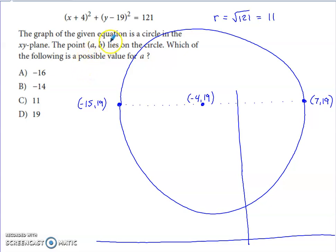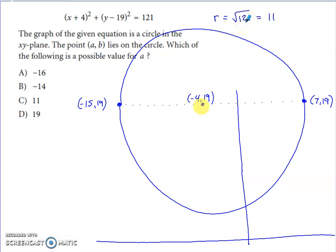The graph of this equation is a circle in the XY plane, and point (A, B) lies on the circle. Which is a possible value for A? The center is (−4, 19) and the radius squared is 121, so the radius is 11. Going 11 units right and 11 units left from the center gives a rough but usable diagram of the circle.